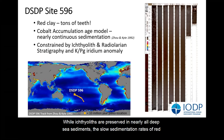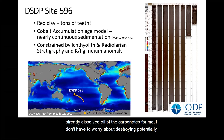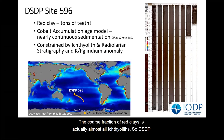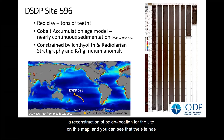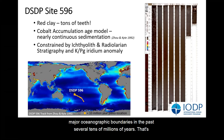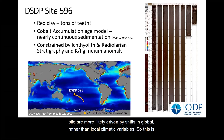DSDP site 596 is a red clay site in the South Pacific Gyre that has an exceptional ichthyolith record. While ichthyoliths are preserved in nearly all deep sea sediments, the slow sedimentation rates of red clays make them ideally situated for ichthyolith work, since corrosive bottom water has already dissolved all of the carbonates, so I don't have to worry about destroying potentially valuable geochemical samples to concentrate my fish fossils into reasonably workable abundances. DSDP site 596 has nearly continuous sedimentation and a well-developed age model based on both cobalt accumulation and biostratigraphy. The site has stayed within the boundaries of the South Pacific Gyre for its whole history, and hasn't crossed any major oceanographic boundaries in the past several tens of millions of years. That means that changes observed at this site are more likely driven by shifts in global rather than local climatic variables.